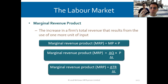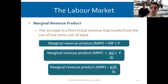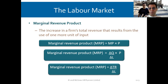The marginal revenue product is the increase in a firm's total revenue that results from the use of one additional unit of labor. So if I have two people and I produce four units, then I bring one more person and I produce five or seven units — one more labor added. The MRP equals marginal product multiplied by price.